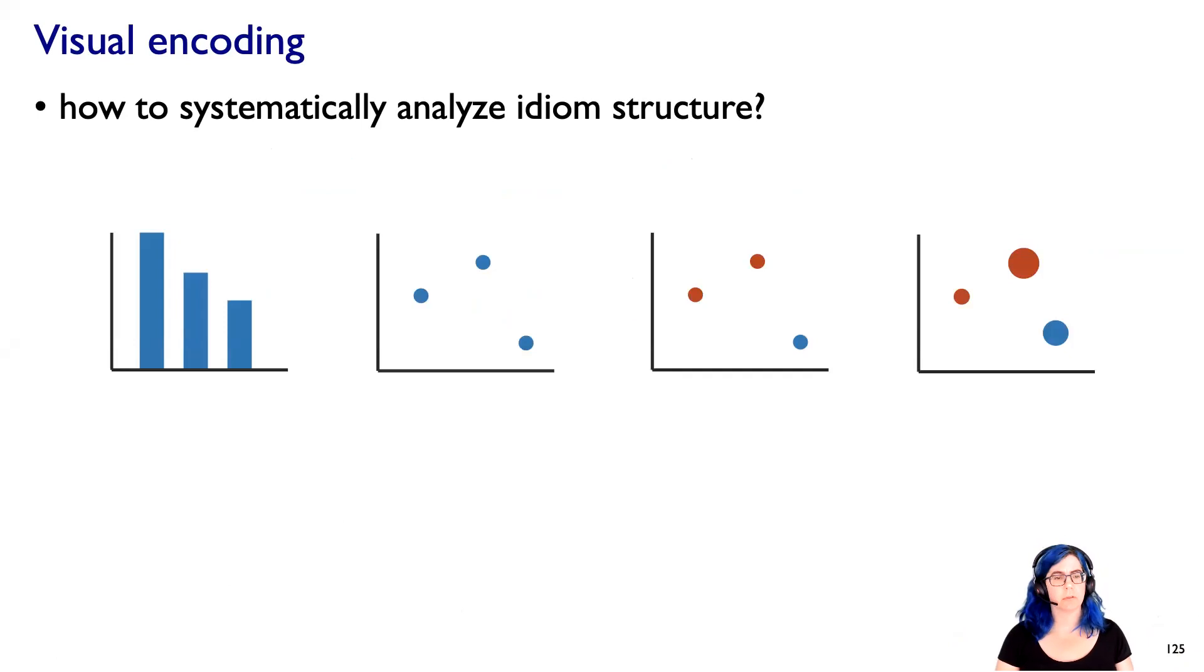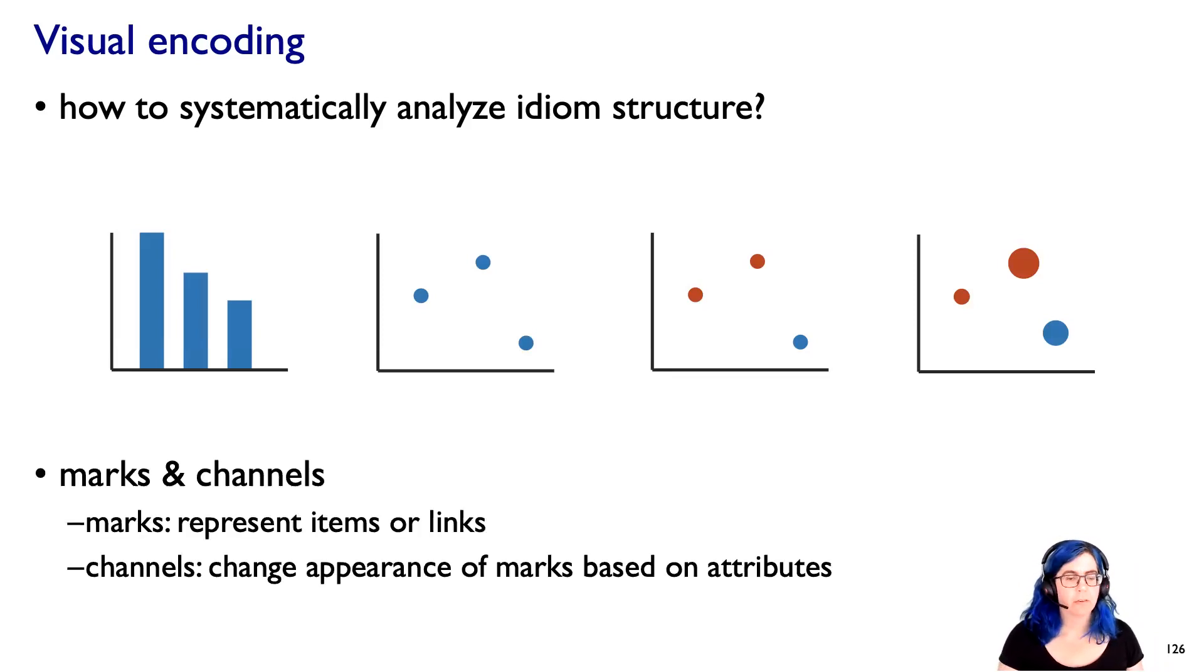Let's take some charts that I'm sure you've seen before. How would we analyze these? Don't just give them a name, but analyze what's going on internally. We're going to use this idea of marks and channels as a model for helping us think about the design of visual encodings. In this model, marks represent items or links, and channels are a way to change the appearance of these marks based on mapping attribute values.